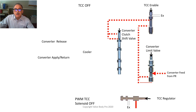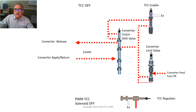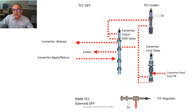The converter feed oil also goes through the converter shift valve and enters the torque converter through the release side, comes out through the converter return line, goes through the converter clutch shift valve, and ends up going through the transmission cooler, where it is returned to the transmission as lubricated oil. This is the basic hydraulics when the torque converter clutch is off.